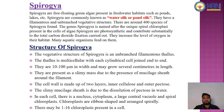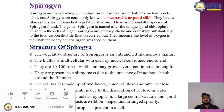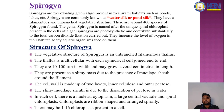The structure of Spirogyra: the vegetative structure is an unbranched filamentous thallus, multicellular with each cylindrical cell joined end to end. They are 10 to 100 micrometers in width and can be several centimeters in length. They appear as a slimy mass due to the mucilage sheath around the filament. The cell wall is made of two layers: inner cellulose and outer pectose. The slimy mucilage sheath is due to the dissolution of pectose in water.